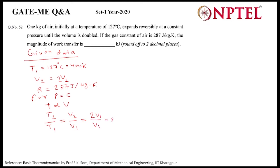And that is 2V1 by V1, so the ratio is 2. From here we can find T2. T2 would be twice of T1, means 800 kelvin.